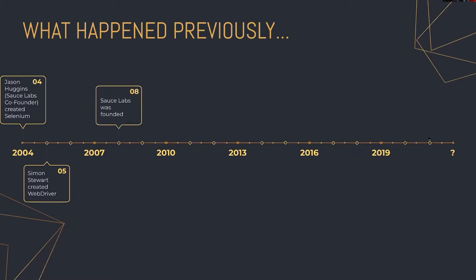This idea of browser automation evolved over time, even to the point where Jason thought it would be a good idea to found a company — which was Sauce Labs. Over the years, it became apparent that each project — Selenium and WebDriver — worked fine but had limitations. Selenium was running similar to how Cypress runs in the browser, with limitations around certain browser automation methodologies. Simon's WebDriver had some problems automating elements on websites. So both came together and decided to merge these projects, calling the combined project Selenium WebDriver.